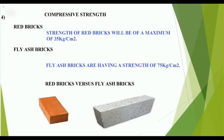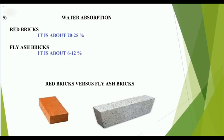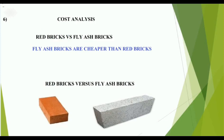Compressive strength: red bricks have a maximum strength of 35 kg per centimeter square, while fly ash bricks have a maximum strength of 75 kg per centimeter square. Water absorption: red bricks absorb 20 to 25 percent, while fly ash bricks absorb only 6 to 12 percent.